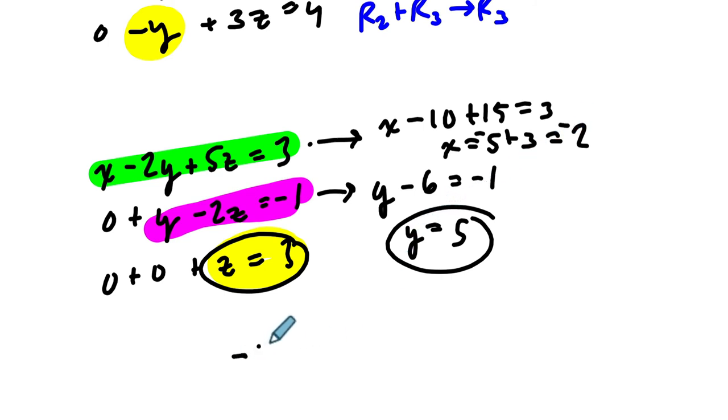So the x value is negative 2, the y value is 5, and then the z value is 3. All right, I hope that helped.